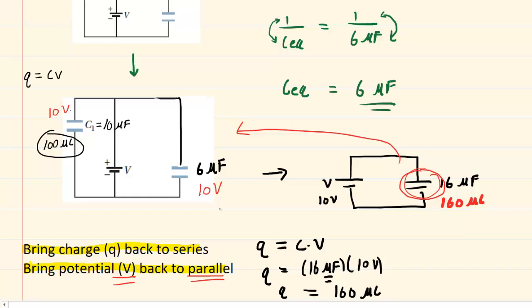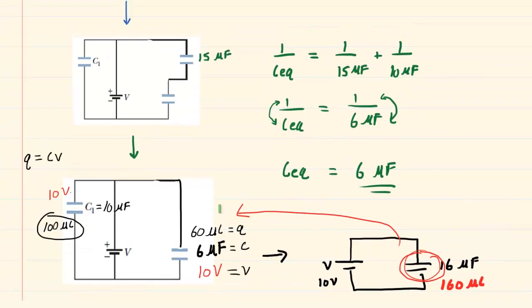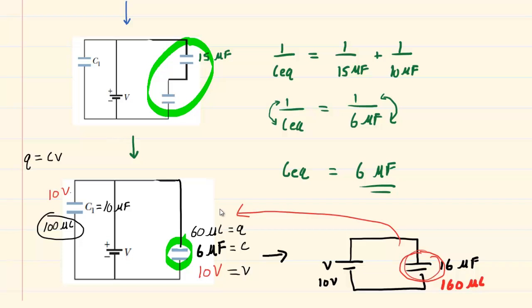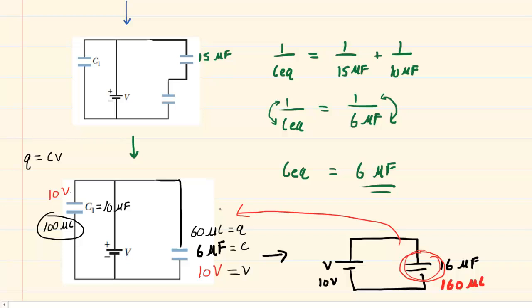Continuing backwards, we multiply the 6-microfarad capacitance by the 10-volt potential to get the charge: 6 times 10 is 60, giving us 60 microcoulombs. We'll label the different values — Q, C, and V. Next, we move from a capacitor backwards to a series arrangement. The rule says to bring the charge with you, so we bring 60 microcoulombs. That means this capacitor has a charge of 60 microcoulombs, and so does the other one.